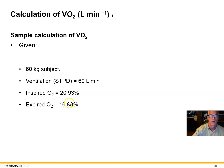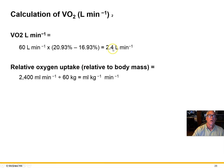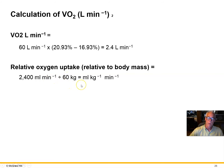So if we have 60 liters per minute of air being breathed out during exercise, and the inspired room air typically contains 21% oxygen, and the expired air contains 16.9% oxygen, we can subtract and then multiply by the total volume of air to figure out how many liters per minute of oxygen has been consumed. In this case, 2.4 liters per minute of oxygen to do that cycling exercise.